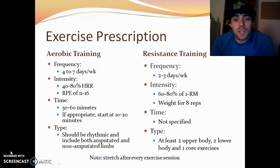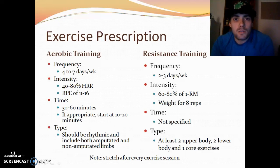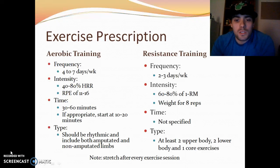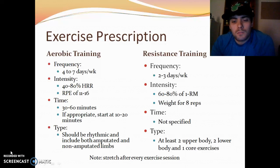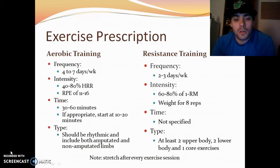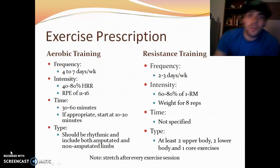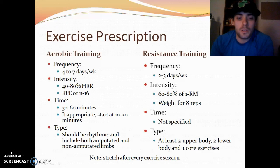For resistance training: frequency is about 2 to 3 days, intensity is 60 to 80% of 1RM or at least use a weight that gets you up to 8 reps or more. There was no time specified. The type of exercises should be multi-joint — at least a combination of 2 upper body, 2 lower body, and 1 core. Stretching is very important and should occur after every exercise session.